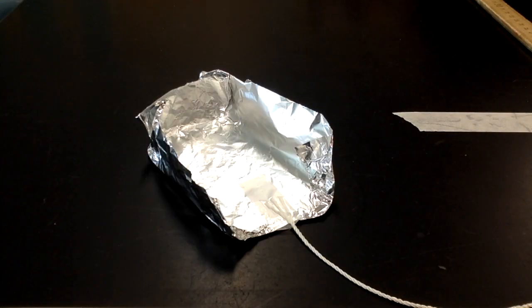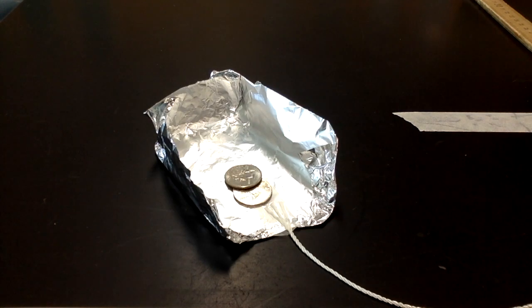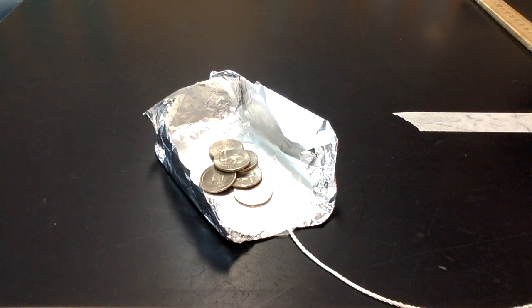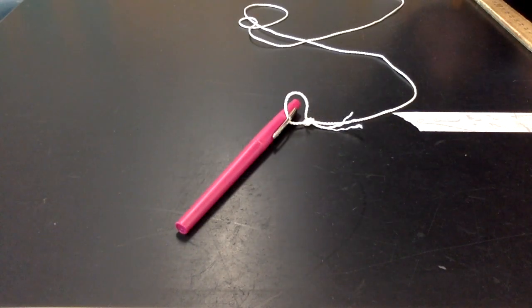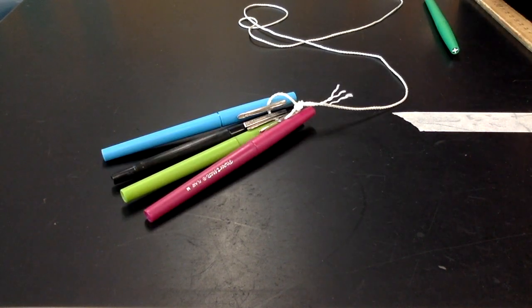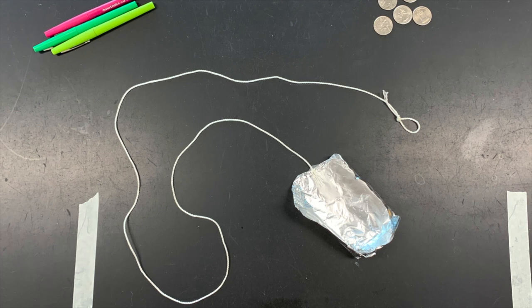In part one of the lab, you'll start with the sled empty. Then you'll compare that to two quarters, four quarters, and six quarters. In part two of the lab, you'll change the number of pens pulling the sled from one to two, three, and four. Good luck and enjoy the lab.